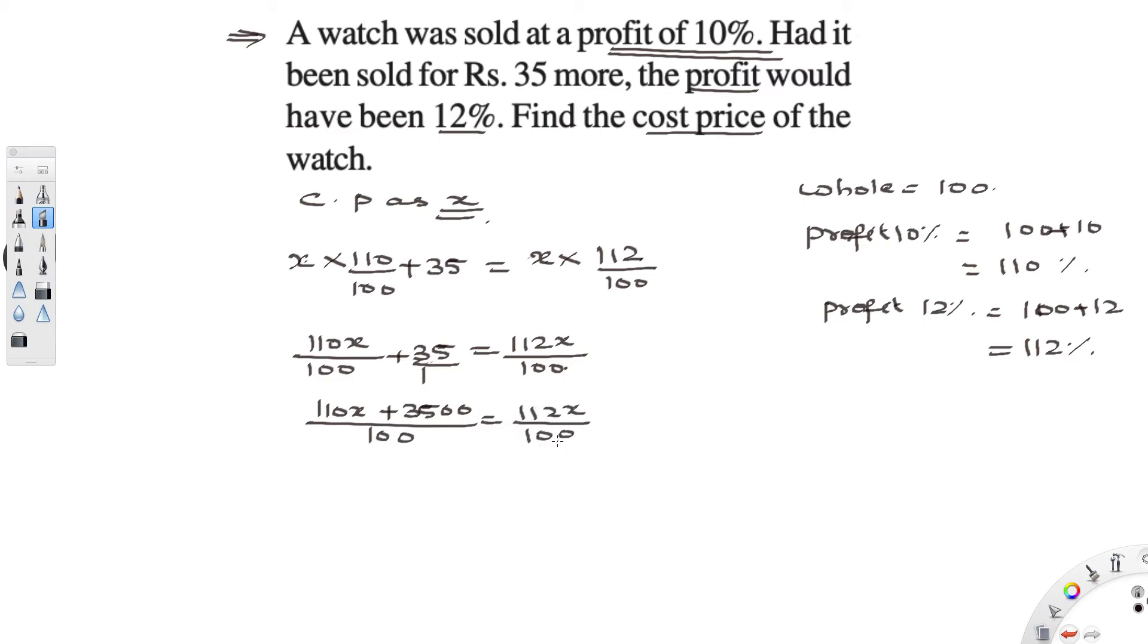As both the numbers are same, the denominator gets cancelled. So I get 110x plus 3500 is equal to 112x. So take the variable to the other side. So 3500 is equal to 112x minus 110x and you get 3500 is equal to 2x.